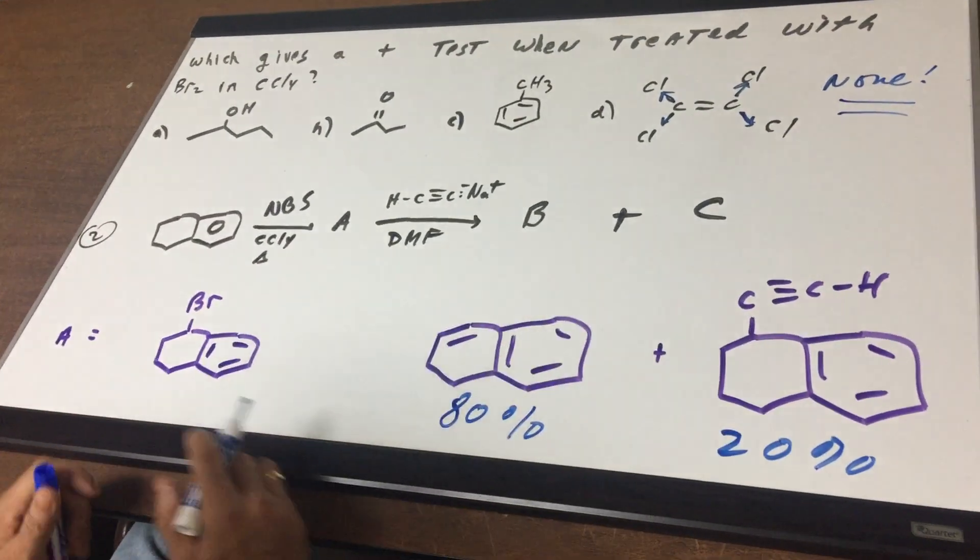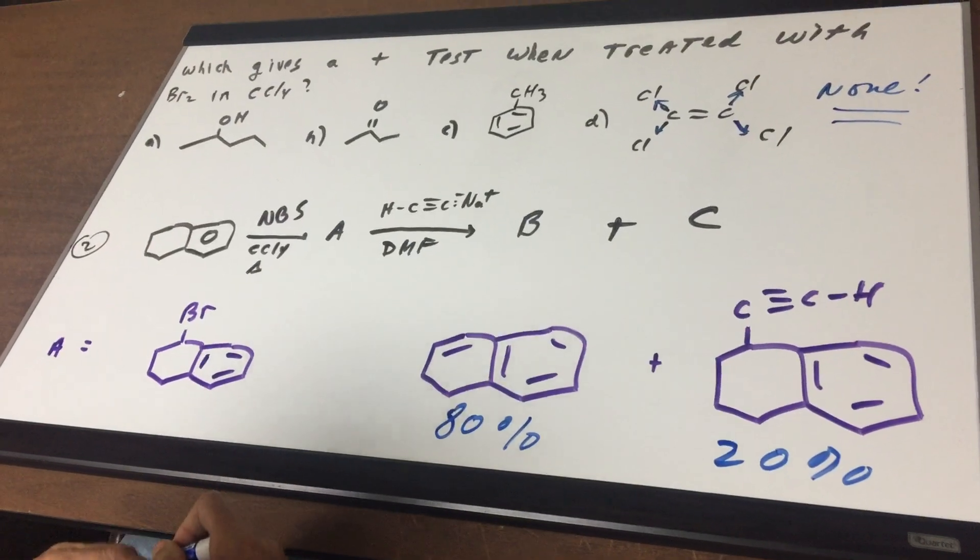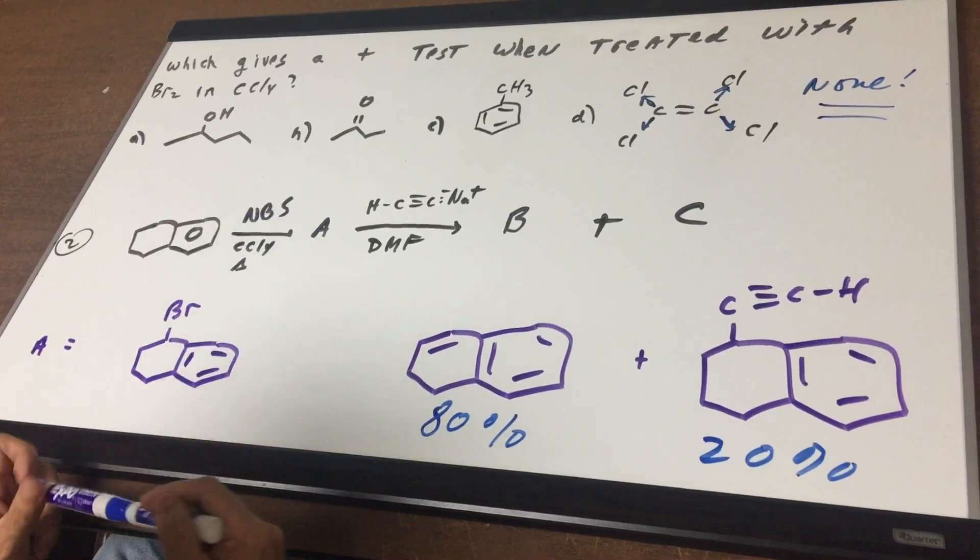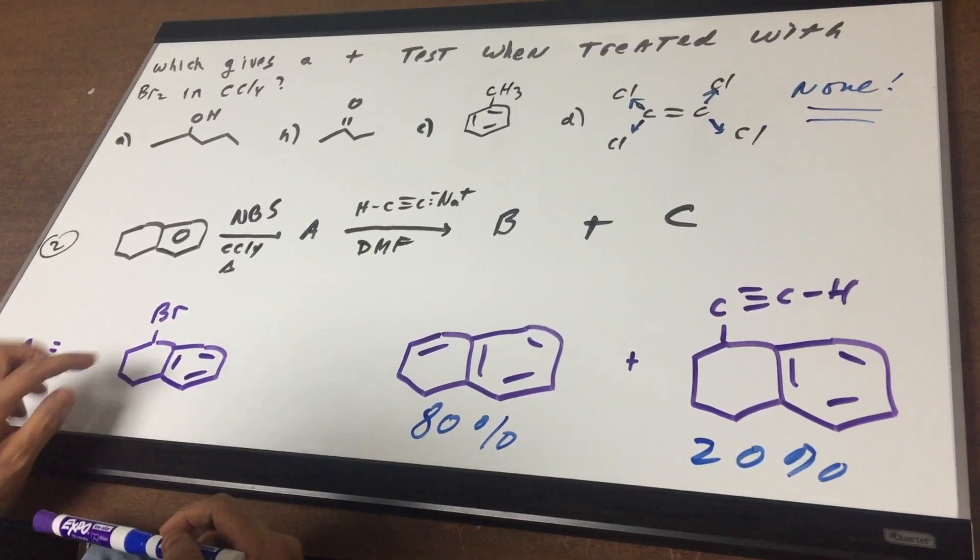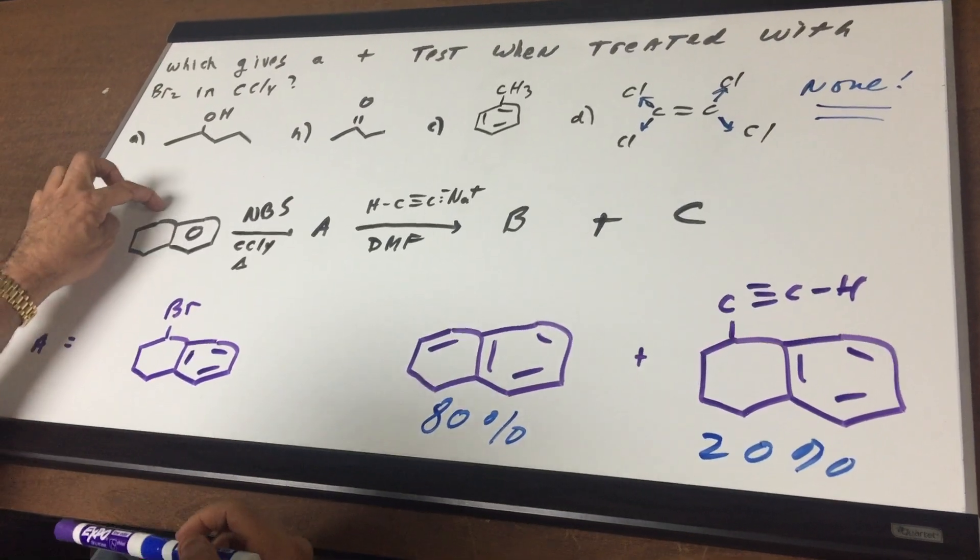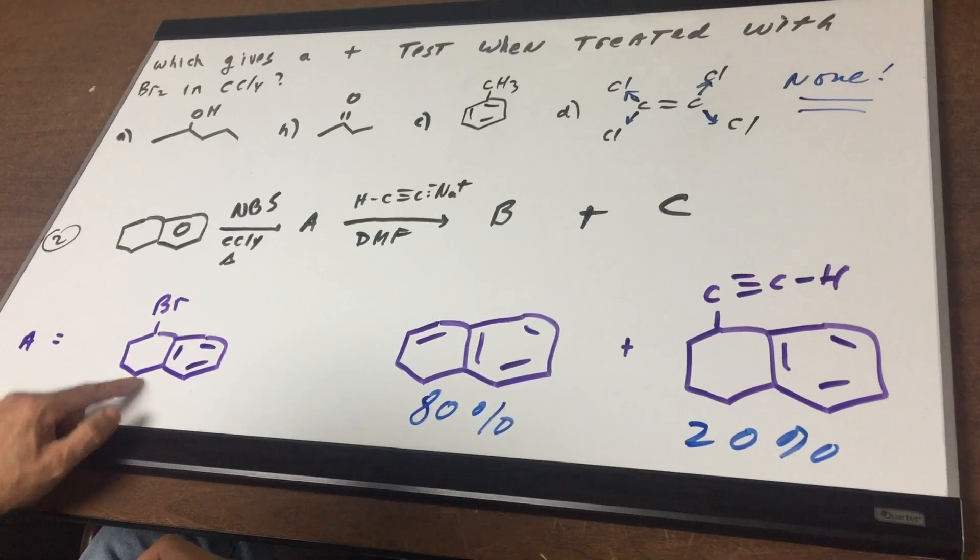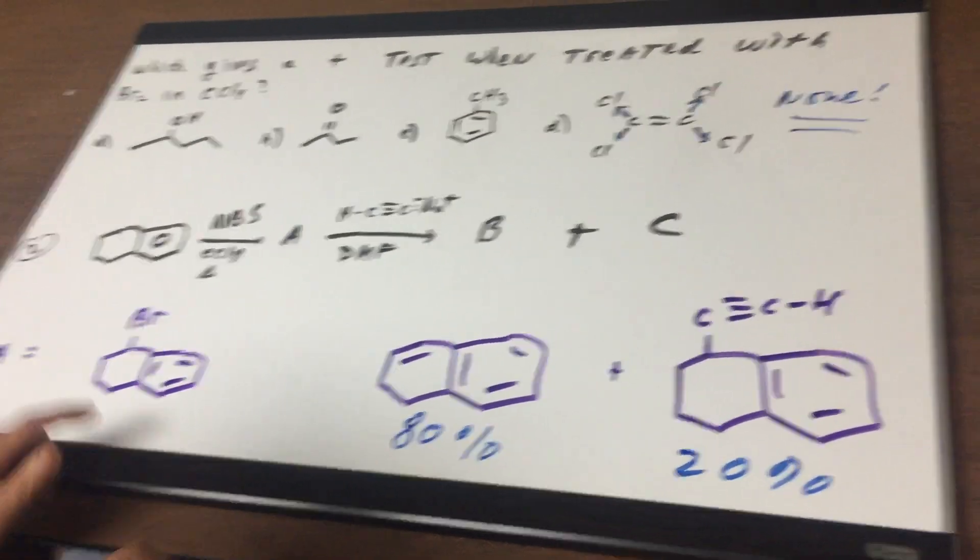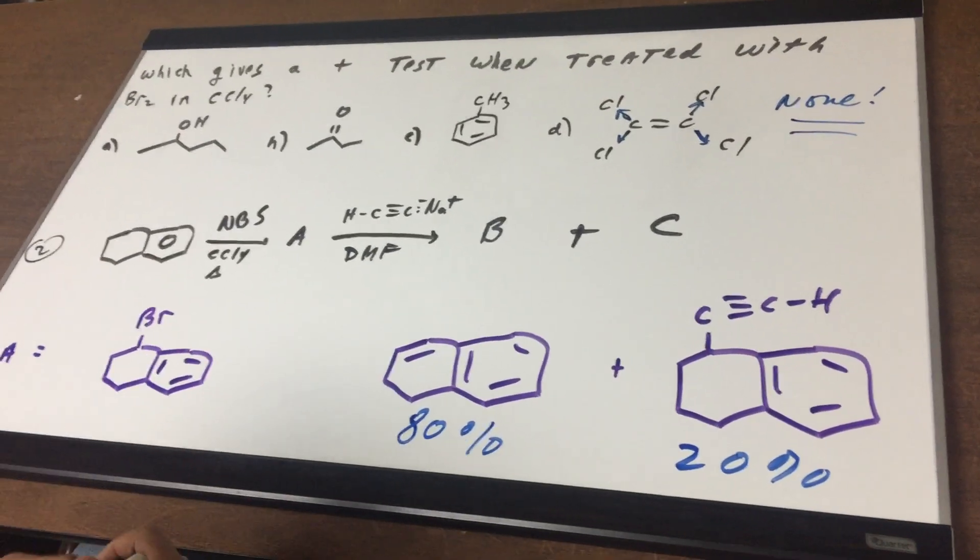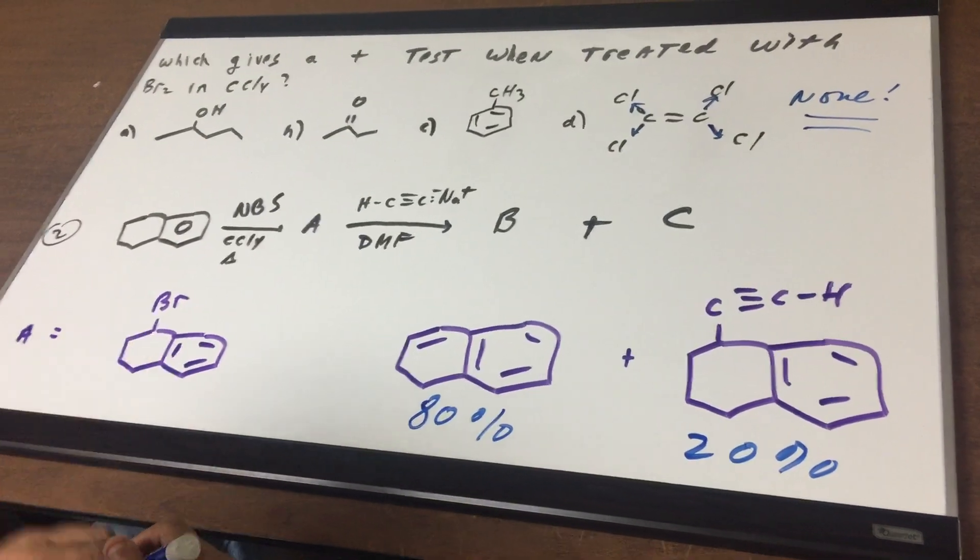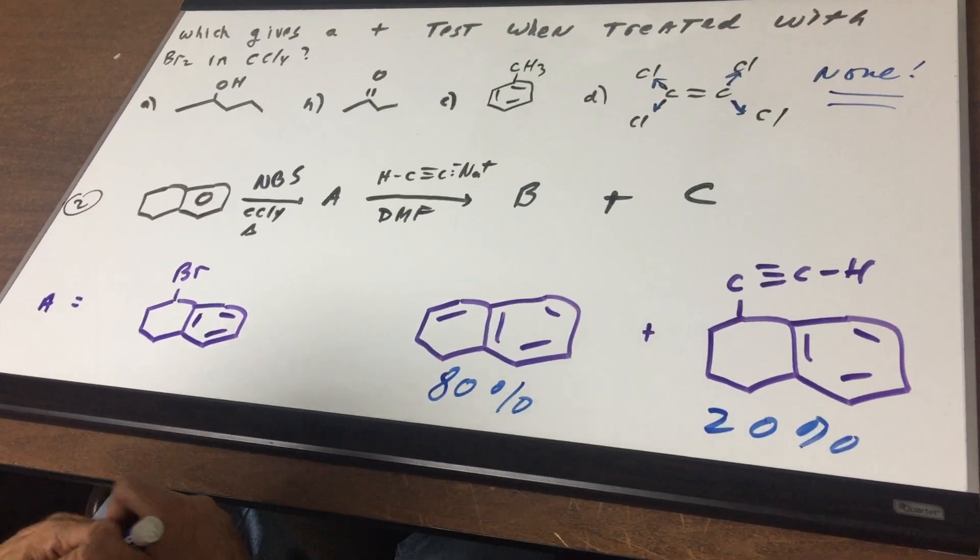Number two. We're going to complete a sequence. First we have NBS. All NBS will do is take the H off of the benzylic position and put in a bromine. So I could have done it here or here. They're equivalent. So we would put the bromine in this position right here. Now this is a secondary halide.